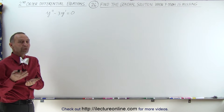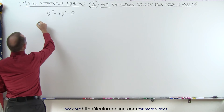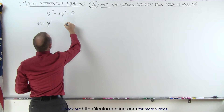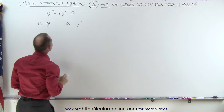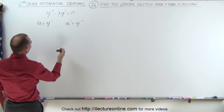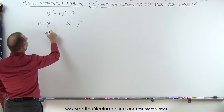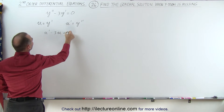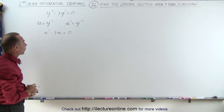First, we're going to do a substitution. We're going to let u equal y prime, which means that u prime is equal to y double prime. We make that substitution into the equation, so the equation will look like u prime minus three times u is equal to zero. And now we've turned that equation into a first order equation.